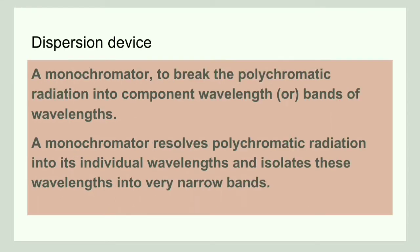Next, we will discuss the dispersion device. The dispersion device used in a spectrophotometer is a monochromator. The monochromator breaks polychromatic light into component wavelengths or bands of wavelength. For example, a prism is a monochromator. When white light passes through a prism, it produces different bands of wavelength. This is the purpose of a dispersion device — to break white light into bands of wavelength. A prism used as a monochromator can be made of glass or quartz. Another example of a monochromator is a filter.